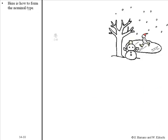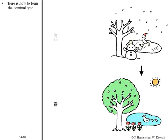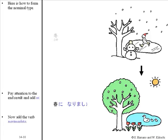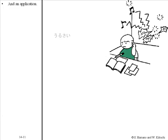Here is how to form the nominal type. Pay attention to the end result and add ni. Now add the verb narimashita. For example: 春になりました. And an application follows.